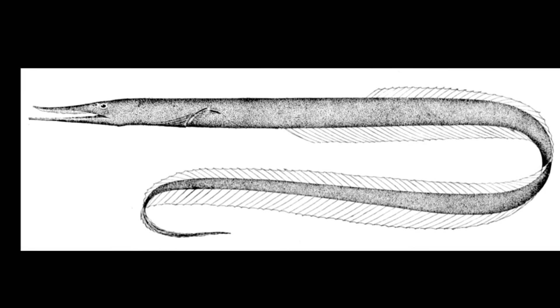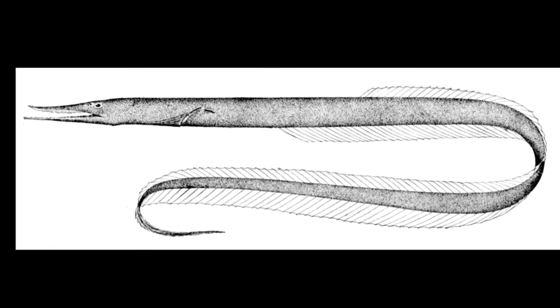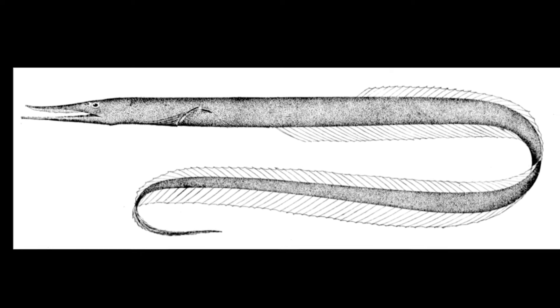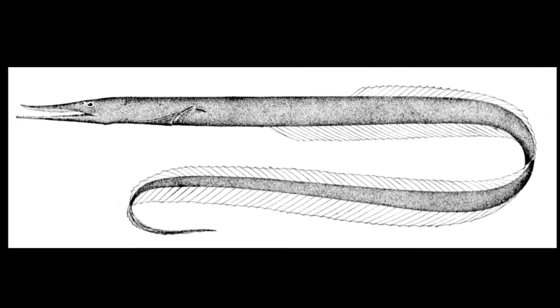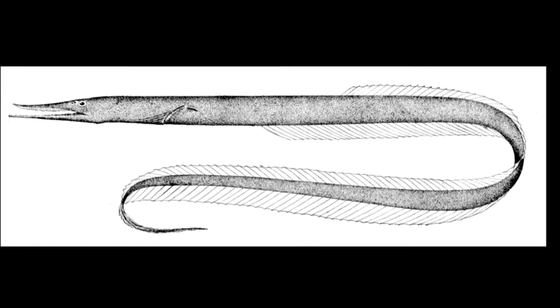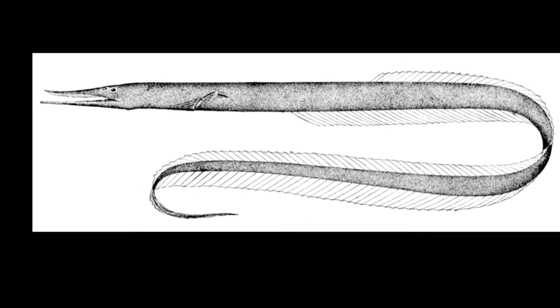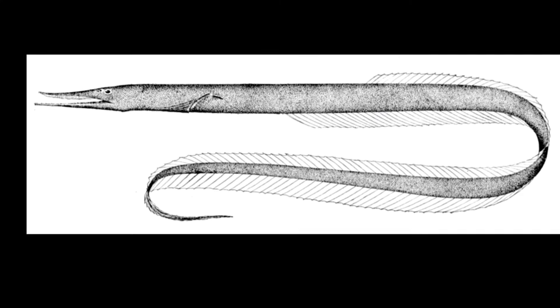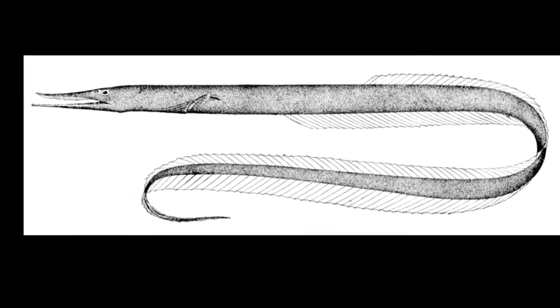Sawtooth eels are common midwater eels that are usually found in the temperate to tropical Atlantic, Indian, and Pacific oceans. There are around 10 species. Sawtooth eels may be found swimming in the open ocean from the surface to 3.7 miles deep. However, they are most commonly found from 0.3 to 0.6 miles deep.